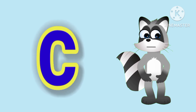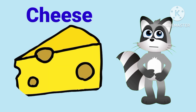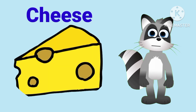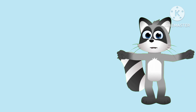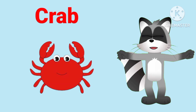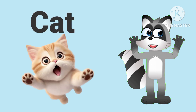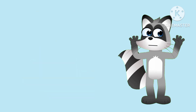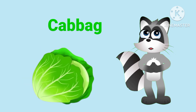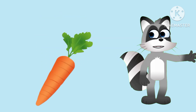C is for cheese. C is for coffee. C is for crab. C is for cow. C is for cat. C is for cabbage. C is for carrot.